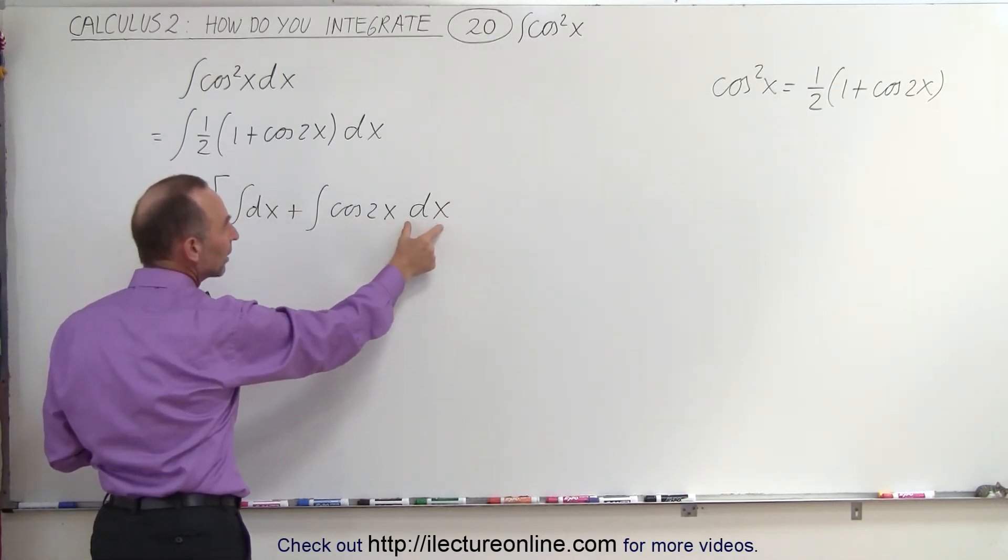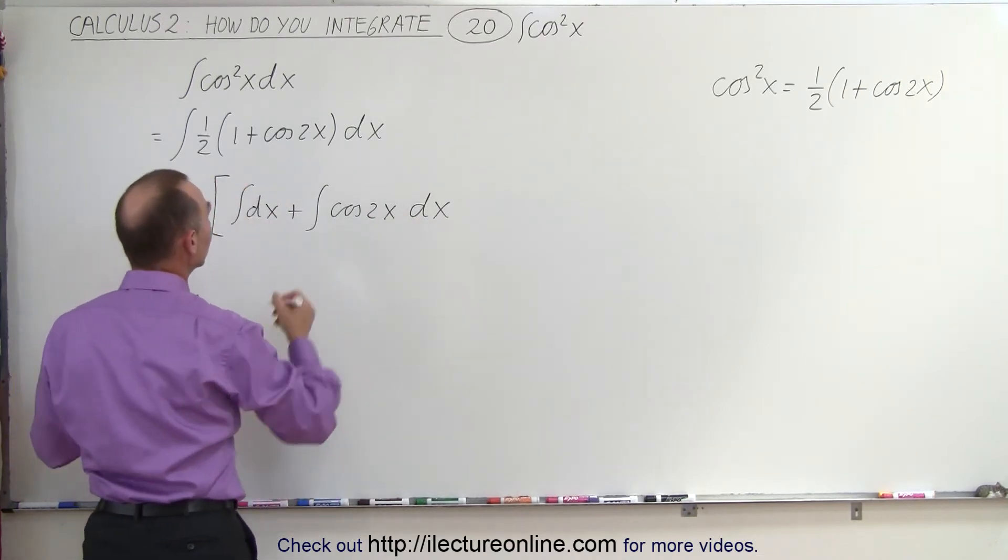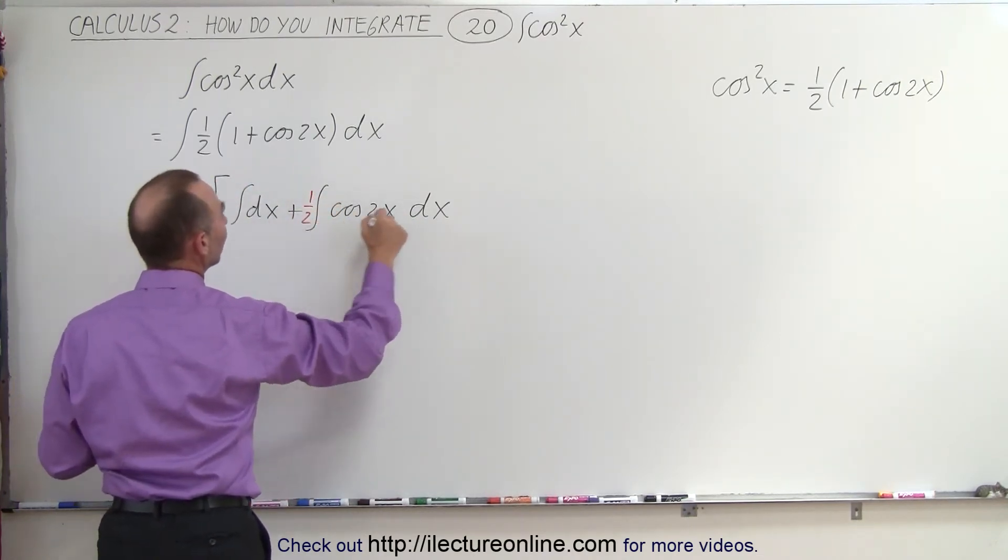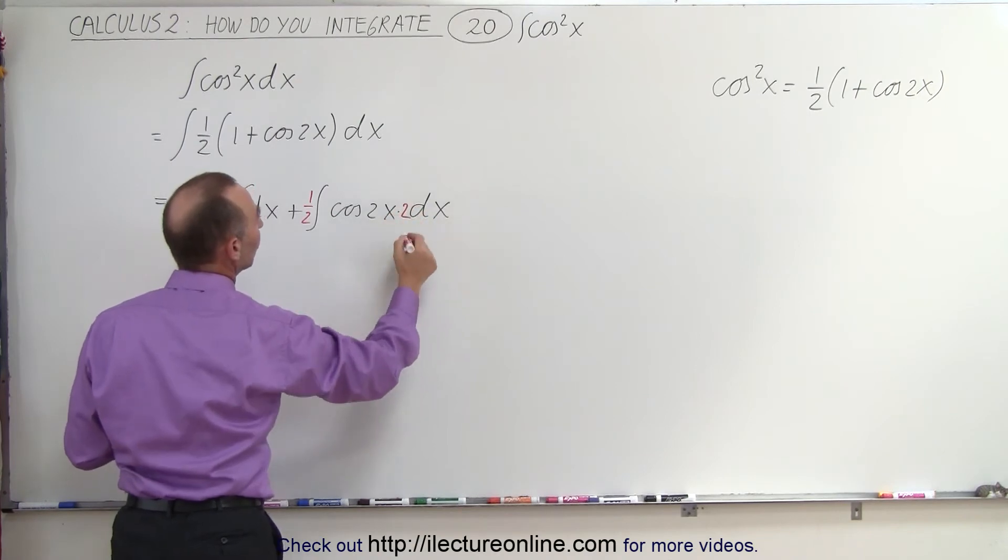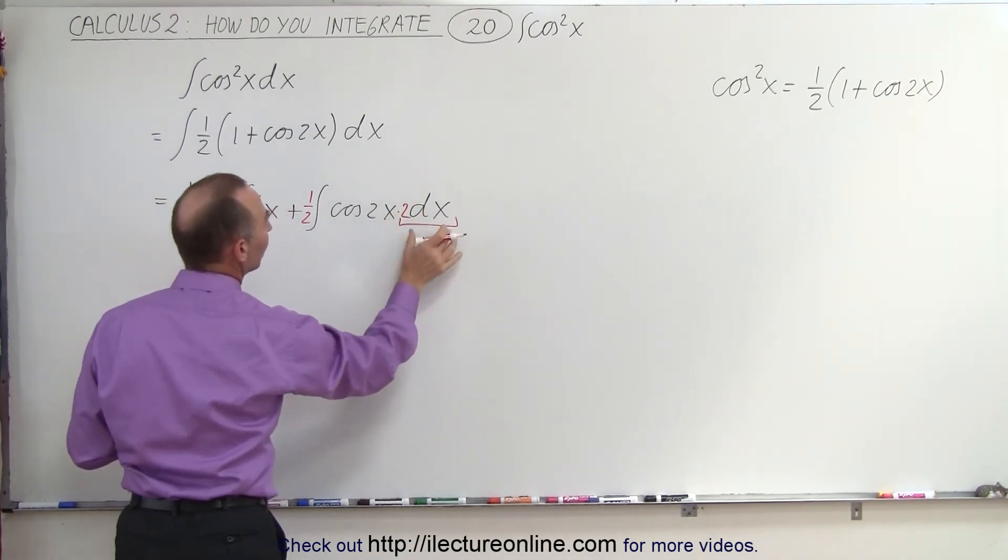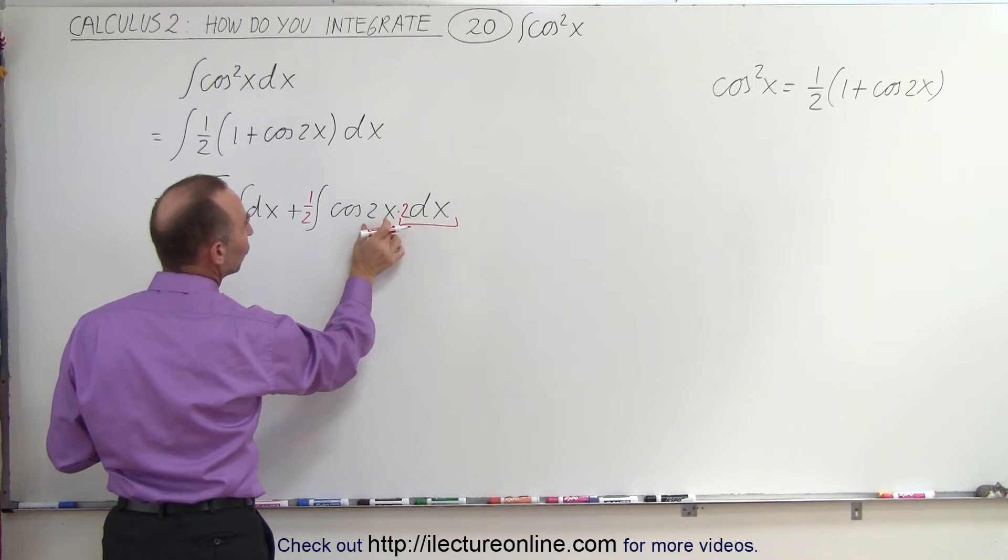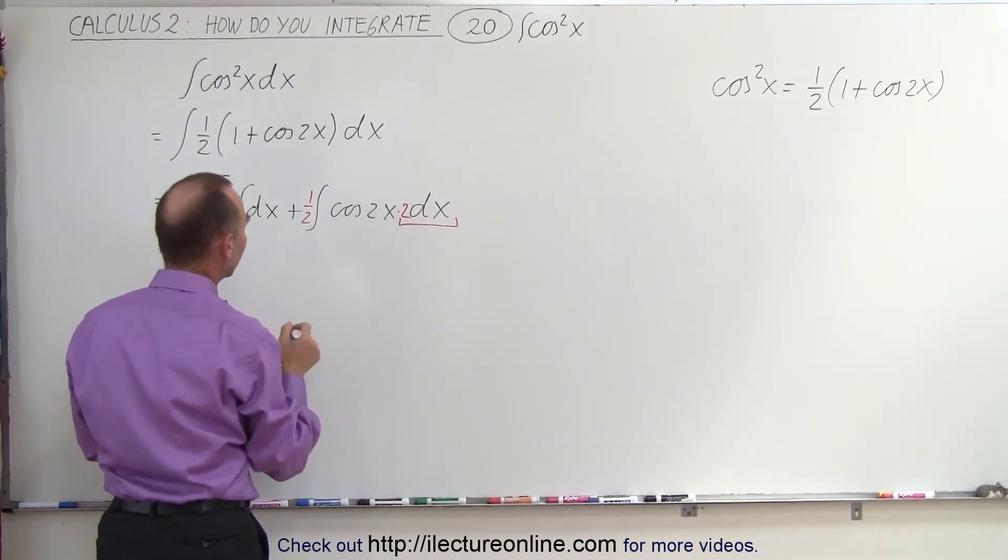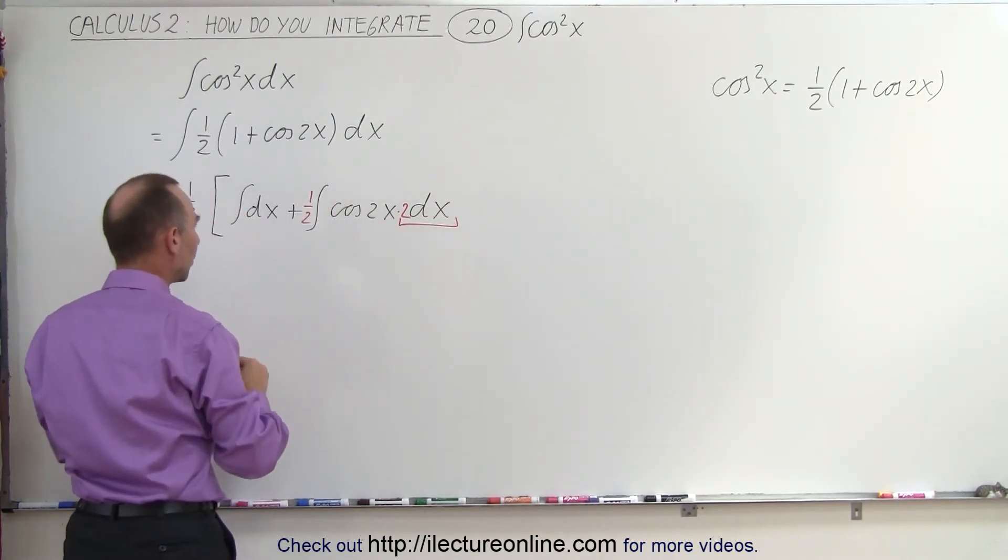We need a two dx. And so what we need to do here is we need to multiply this by one-half and multiply this times two. So now we have a proper differential of two x, which is the differential of the angle two x. And let's compensate by putting a one-half in front.